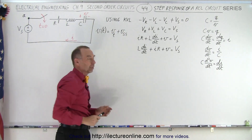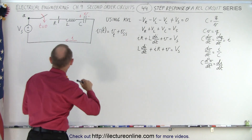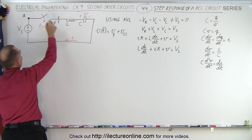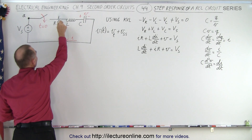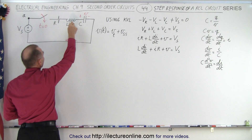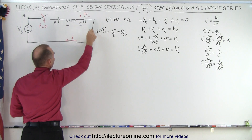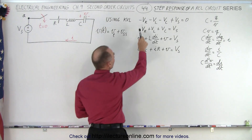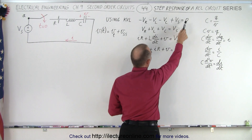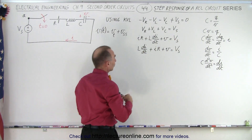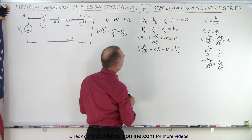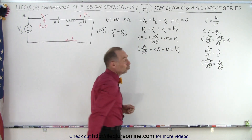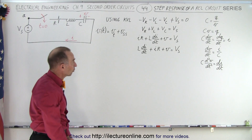We're going to start with KVL — adding up all the voltage drops and voltage rises around the circuit. Once we close the switch, we have a voltage drop across the resistor, a voltage drop across the inductor, a voltage drop across the capacitor, and a voltage rise across the source. The three voltage drops plus the rise adds up to zero. We can rearrange the terms so that the sum of all the voltage drops equals the voltage of the source.